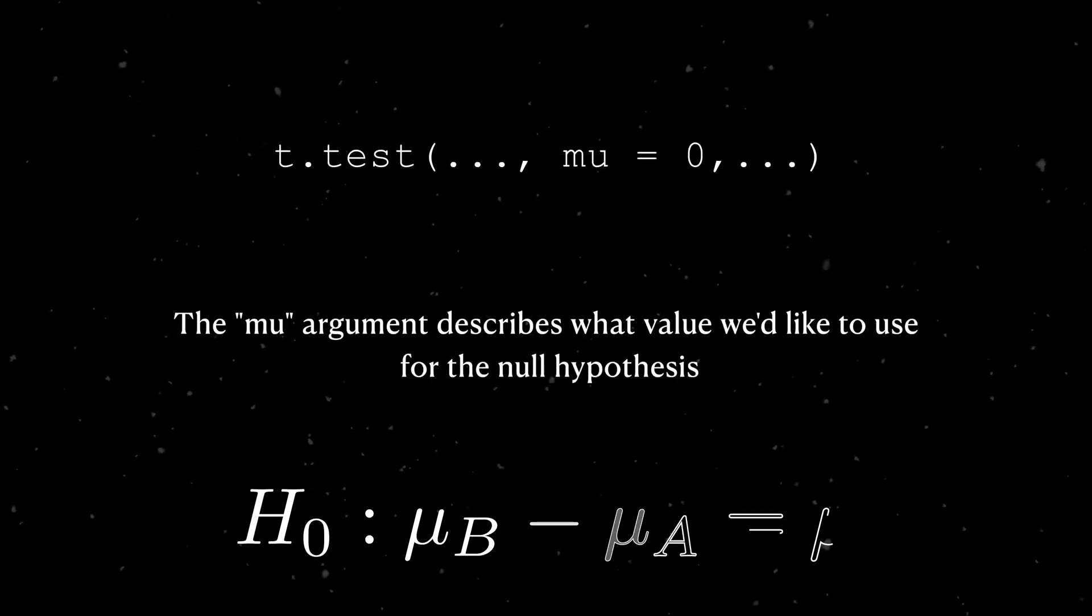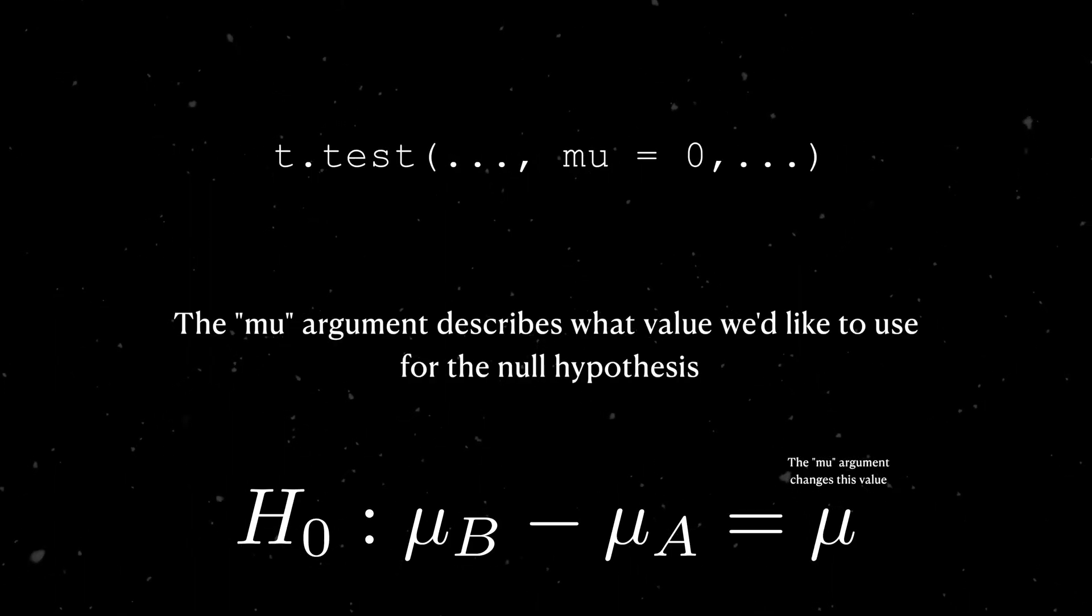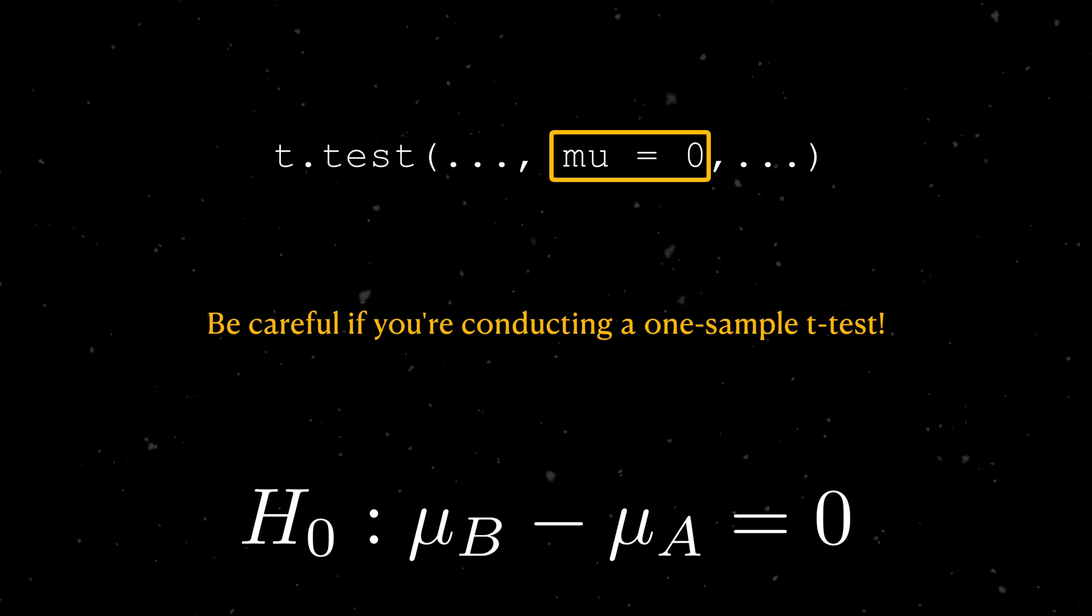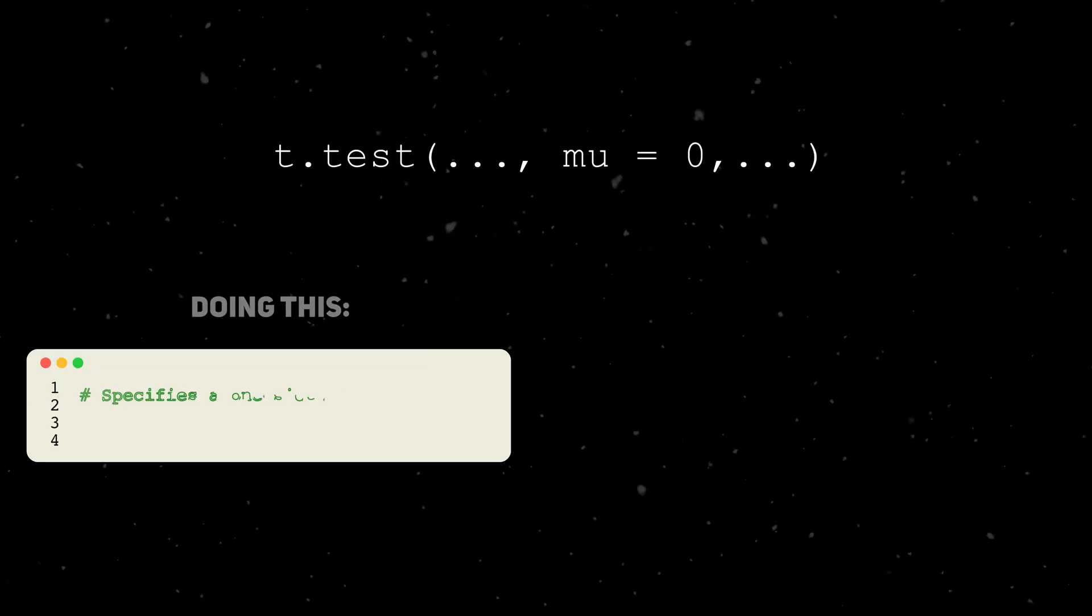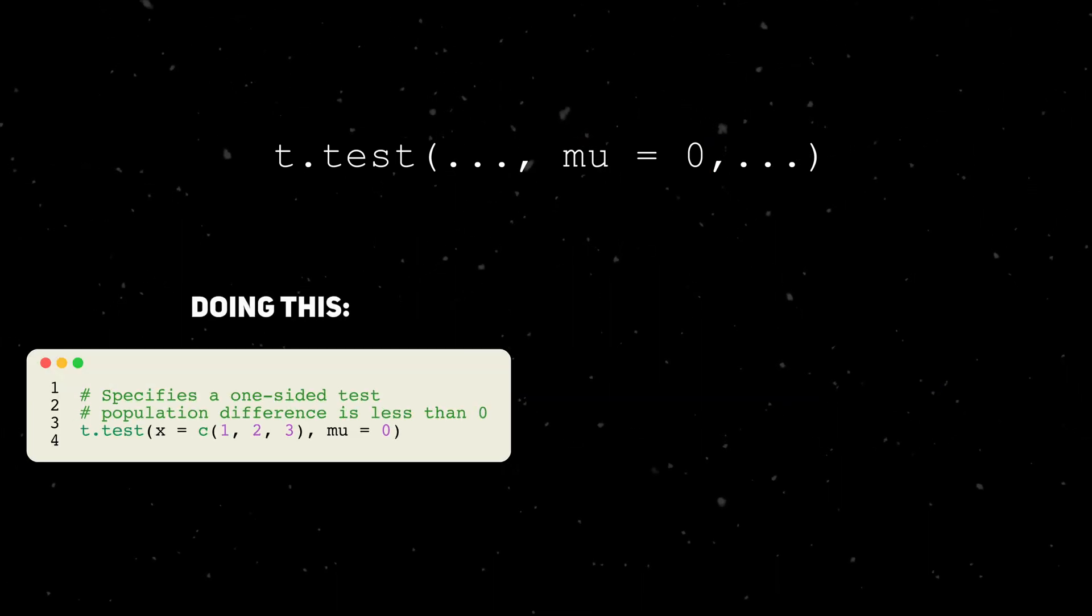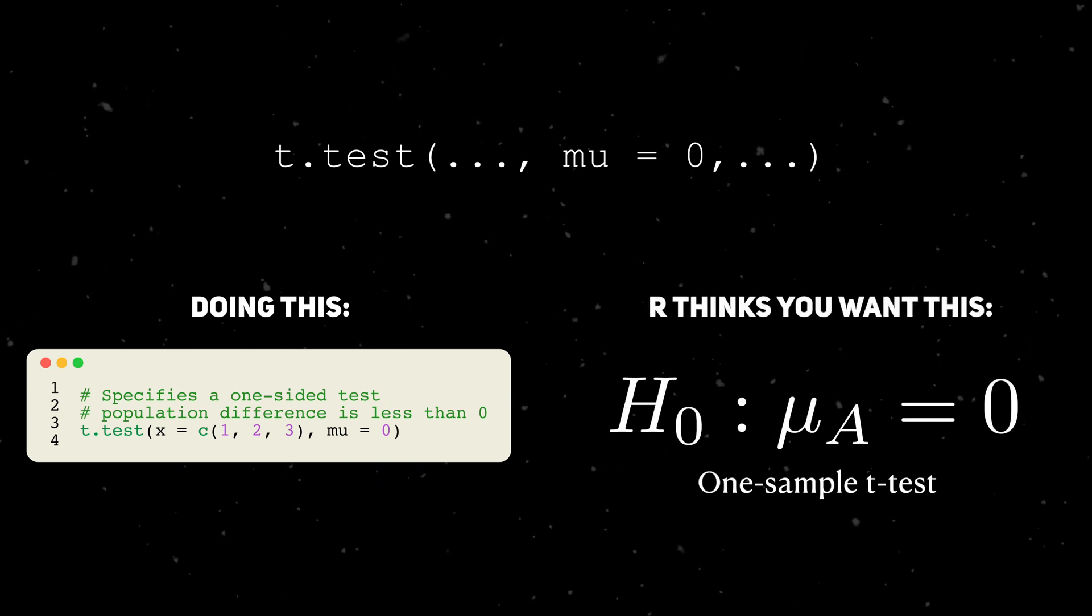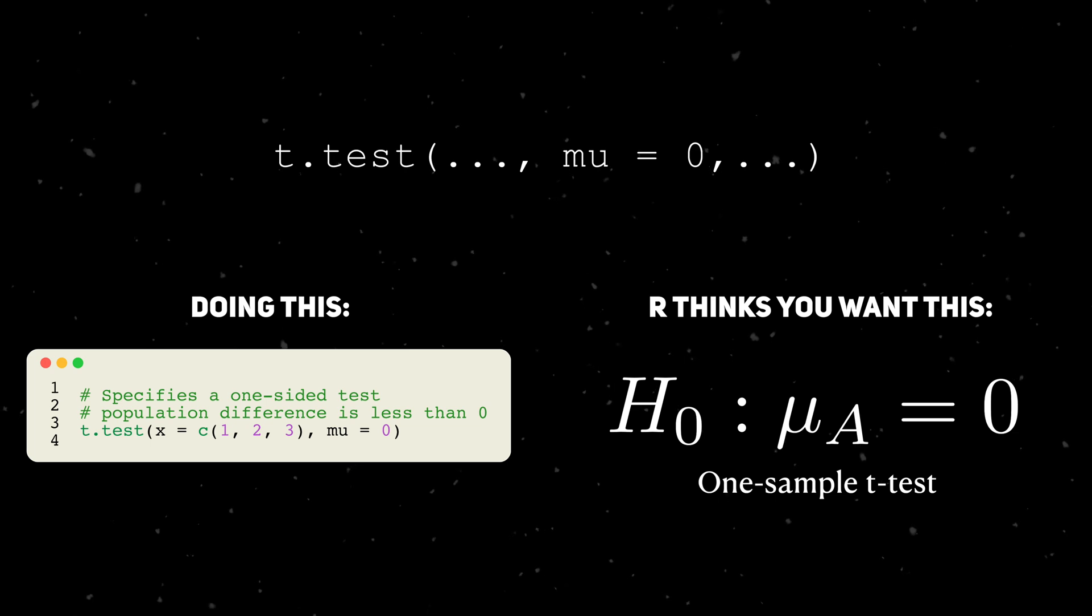Next is the mu argument. The mu argument describes what value we want to use for the null hypothesis. The default value for the mu argument is zero, so be careful when you're conducting a one-sample t-test. Zero is the most commonly used value for two-sample t-tests, so if you don't adjust it, you'll probably make some incorrect conclusions for one-sample problems.